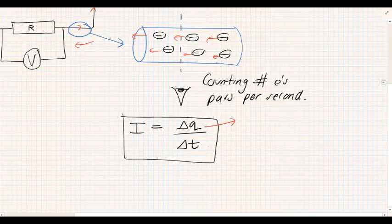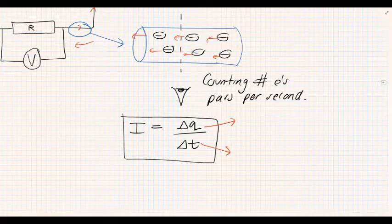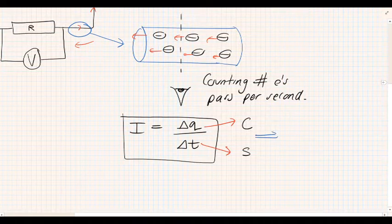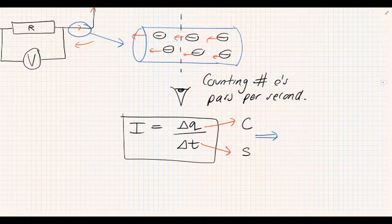Now if we have a look at the units of current, we can derive those from the formula. The units of charge Q are C, which is coulombs, and the unit of time is seconds. If we combine the two together, because it is charge divided by time, that would mean the units would be coulombs per second.